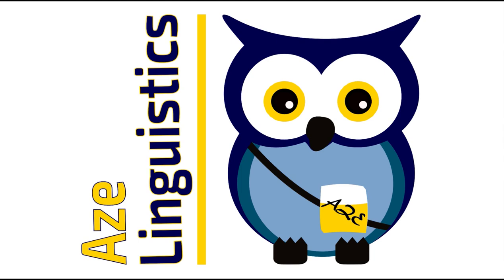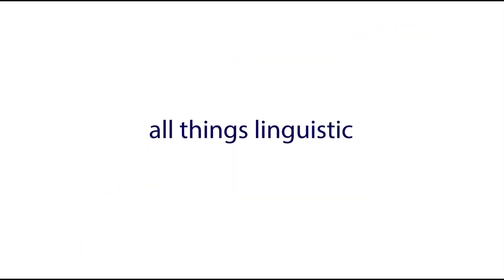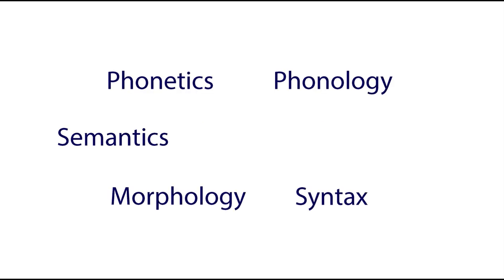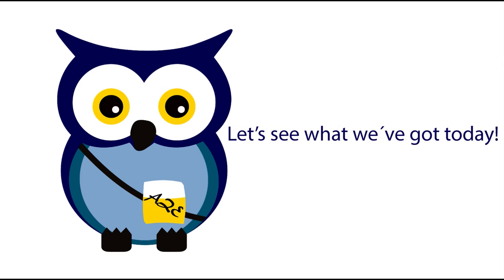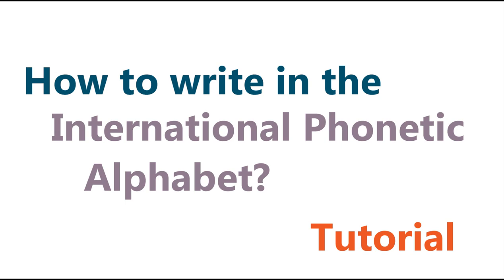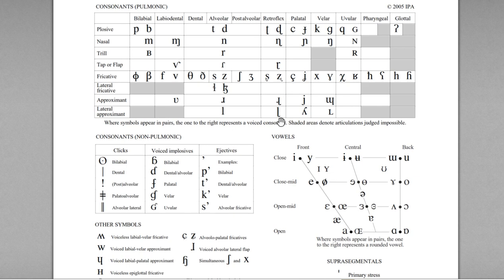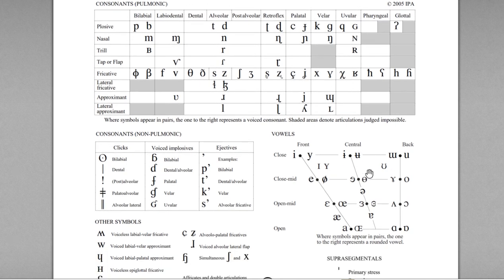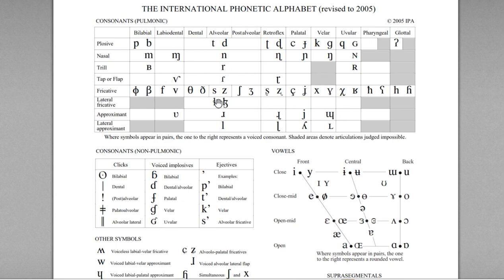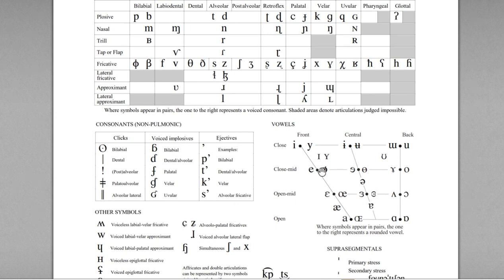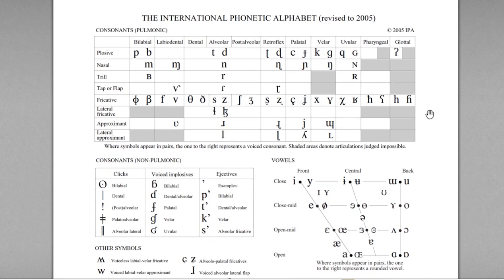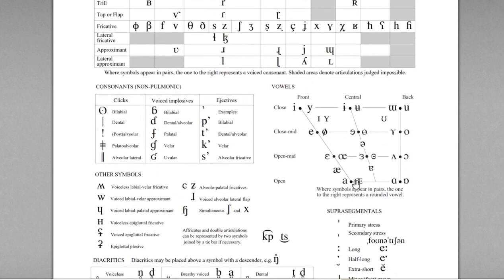Welcome to ACE Linguistics. This channel is about all things linguistic, discussing topics in phonetics, phonology, morphology, syntax, semantics, and sociolinguistics. Today I'm going to walk you through the symbols of the IPA — the International Phonetic Alphabet — and clarify the relationship between these symbols and the sounds they represent, covering all the sounds of all human languages. I'll walk you through the consonant chart, the vowel chart.